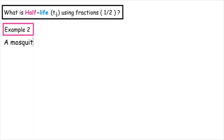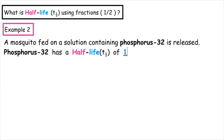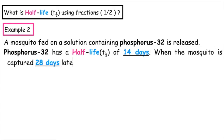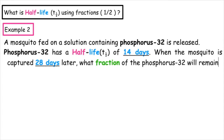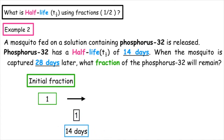Example two: a mosquito fed on a solution containing phosphorus-32 is released. Phosphorus-32 has a half-life of 14 days. When the mosquito is captured 28 days later, what fraction of the phosphorus-32 will remain? We know we're working in fractions, so we always start with one. If it undergoes one half-life, which is a total of 14 days, the fraction left over will be a half.